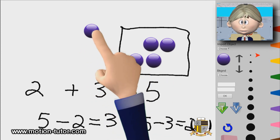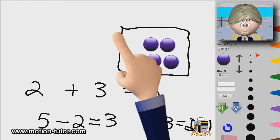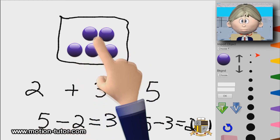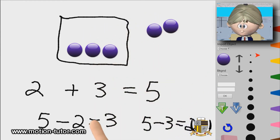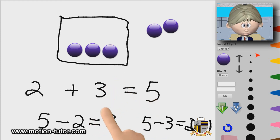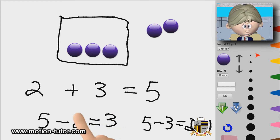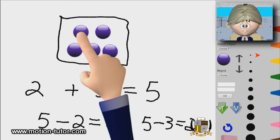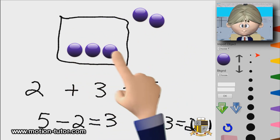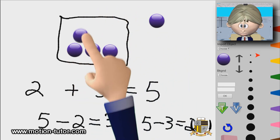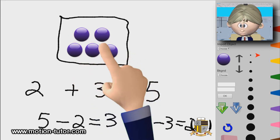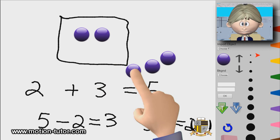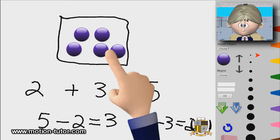So what we can see here is five take away two is three. And we can also say it as three plus two is five — five take away two is three, three plus two is five. Five take away three is two, and two plus three is five. You can see how they're just opposites of each other.